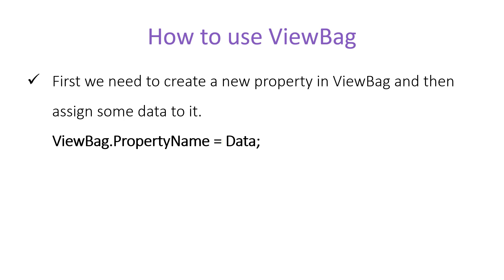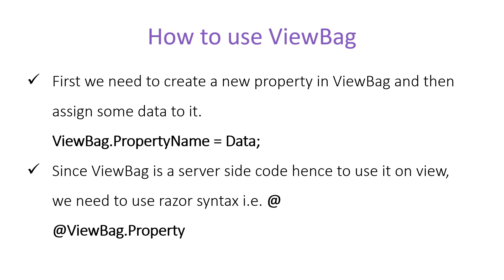Then press equals and assign the data, which may be of any type — whatever type you have in your C# you can assign to a ViewBag property. To use this property on a view, since ViewBag is server-side code, we use Razor syntax — the @ symbol. Write @ then ViewBag and the same property name used when assigning the data.